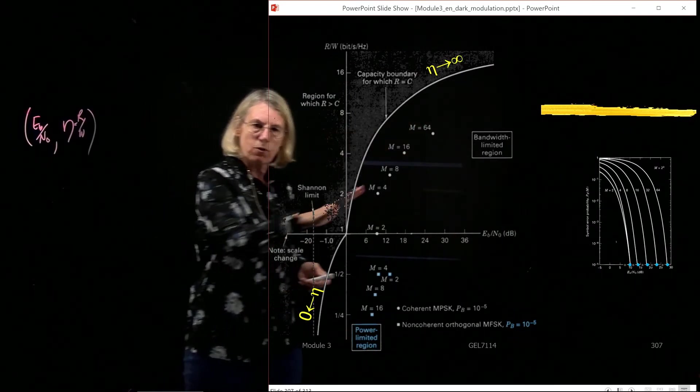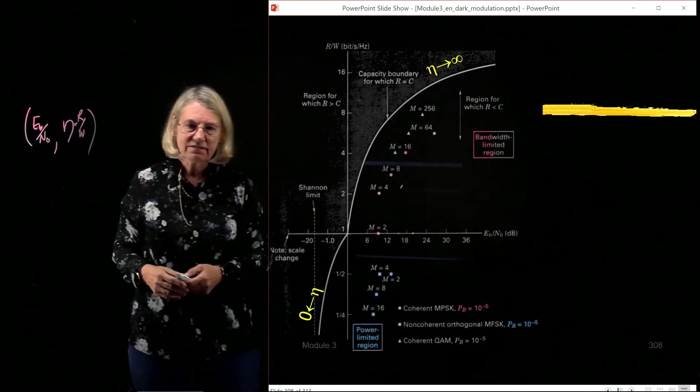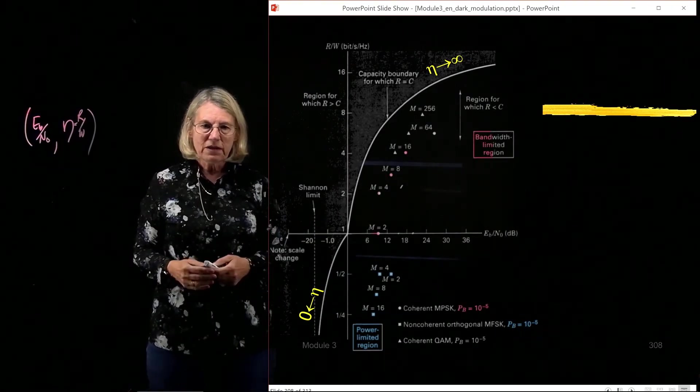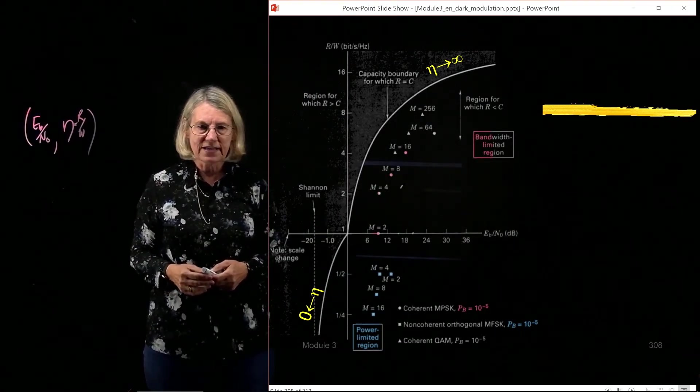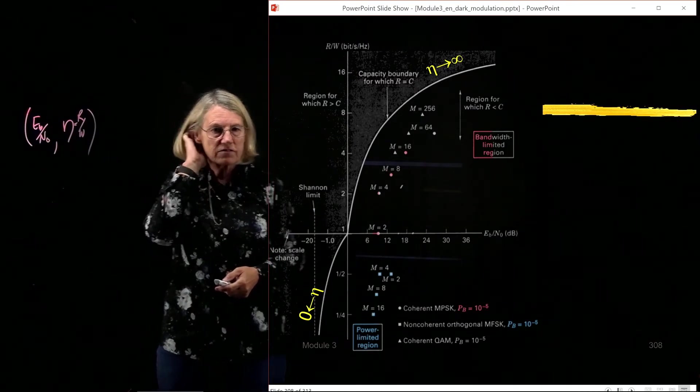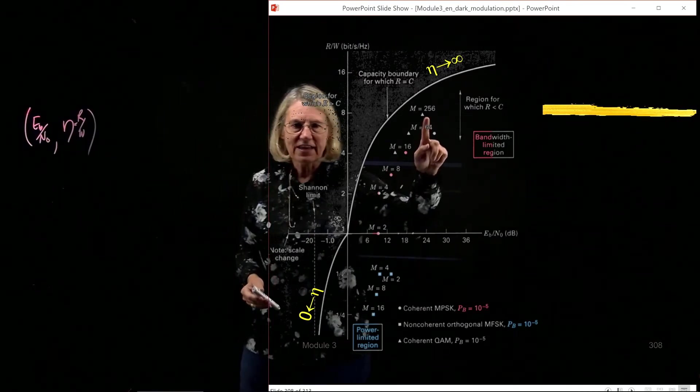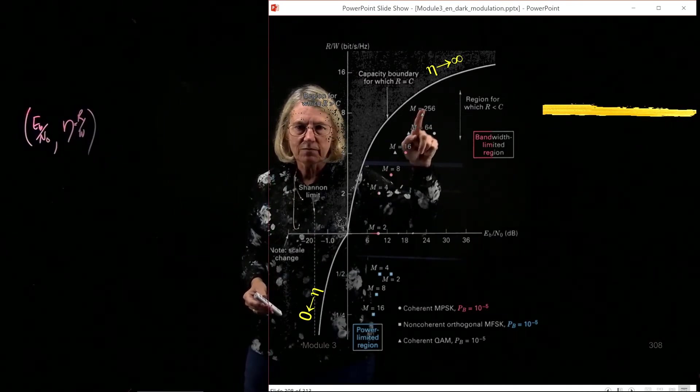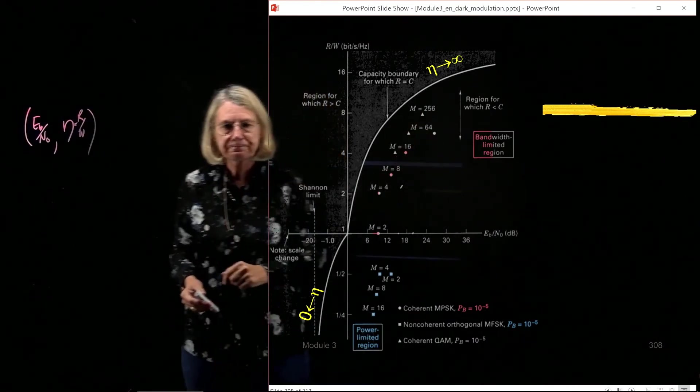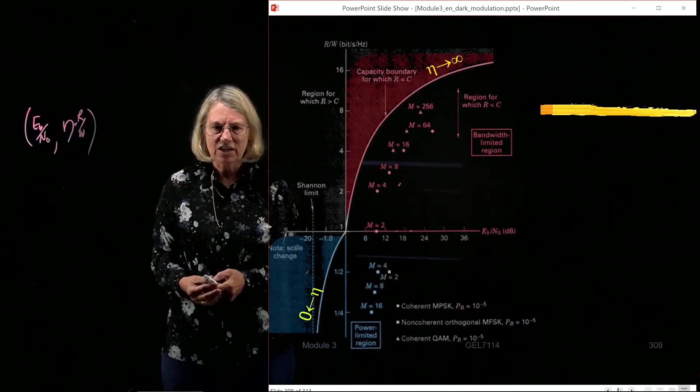So this has been for PSK, coherent detection, and the last one would be for QAM. And so I can take the QAM curves, do something similar, and then I have these triangle points which are up here.